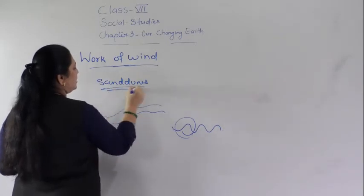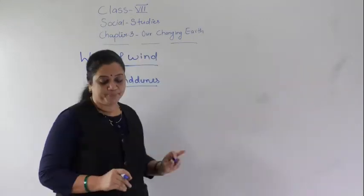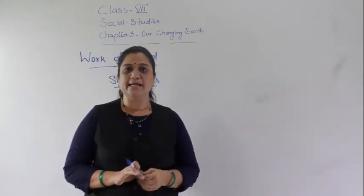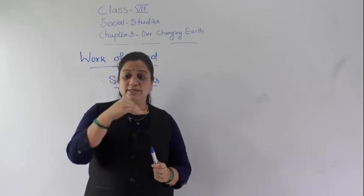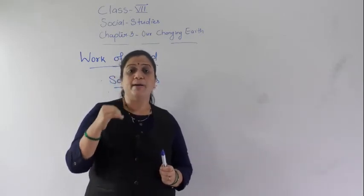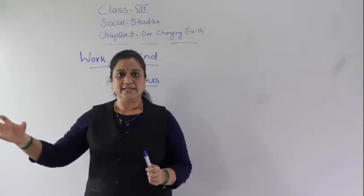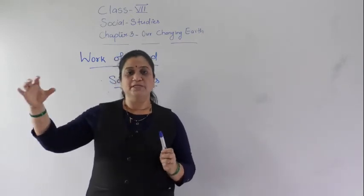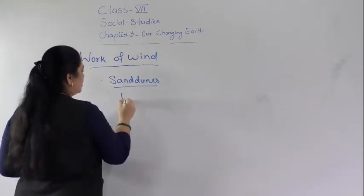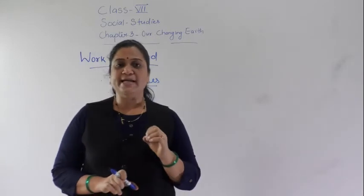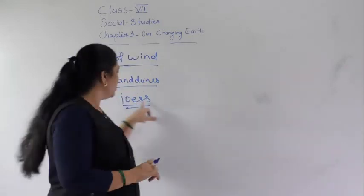Sand dunes are the small hills of sand. When the grains — the particles in the sand — are very fine and lighter, these particles are carried by the wind over a long distance and deposited at a place. The structure formed by these fine particles of soil is called loess. The Gobi Desert in China is made up of large deposits of loess.